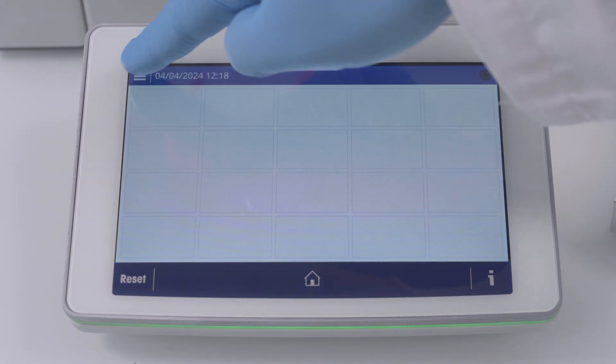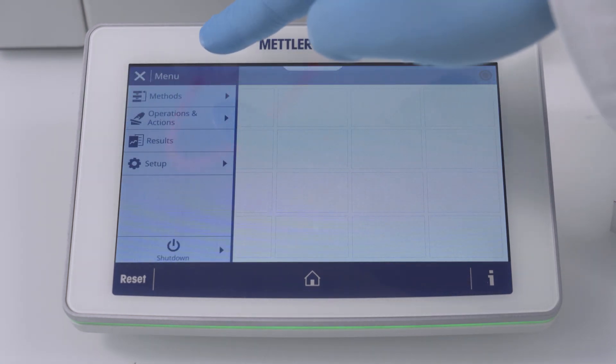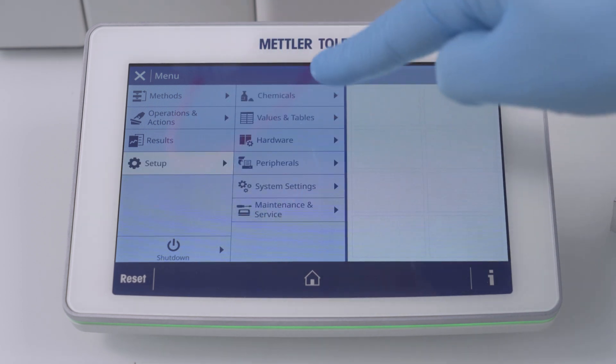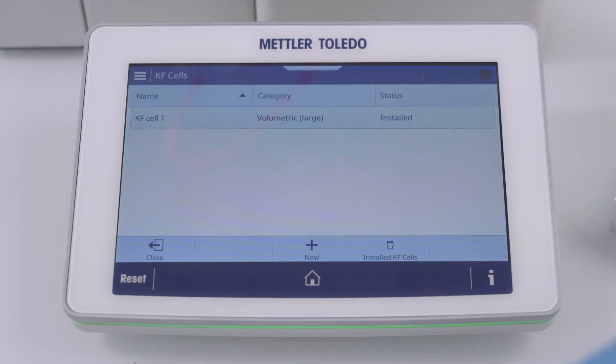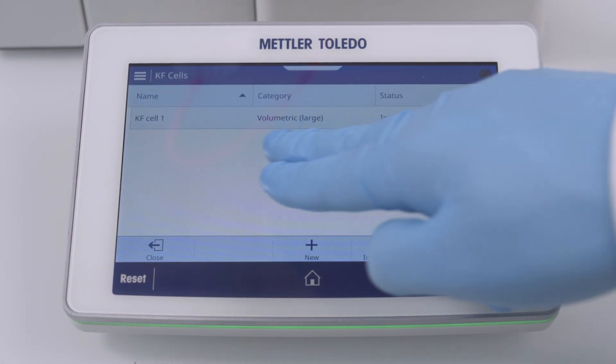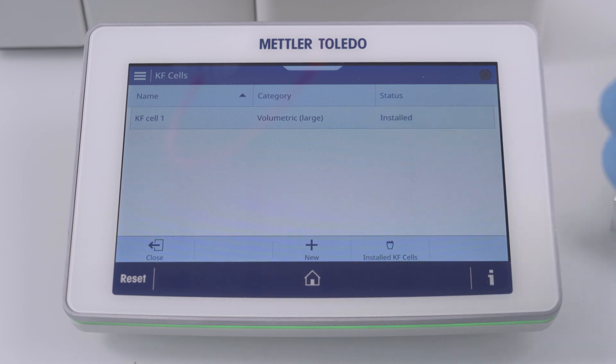The KF cell does not need to be created. There already exists a default KF cell under setup hardware. Nevertheless, we need to check if it's configured correctly. Means to check if the physically installed KF cell matches the one configured in the setup. In this example, we use the large KF beaker to measure. The resource entry is therefore correct.